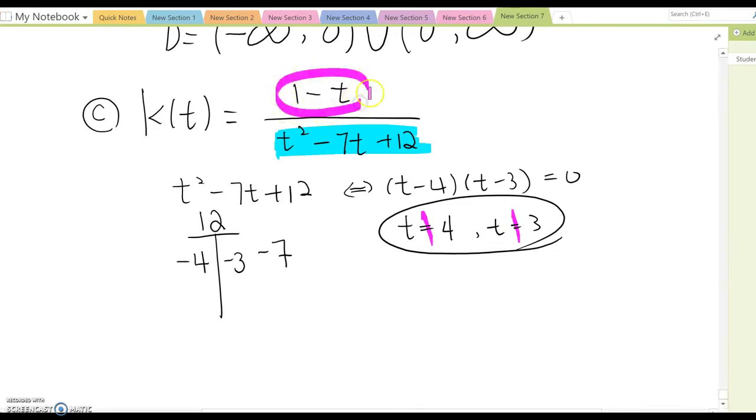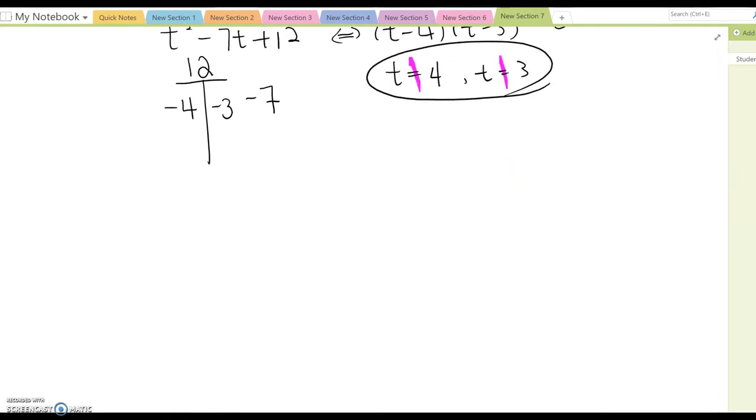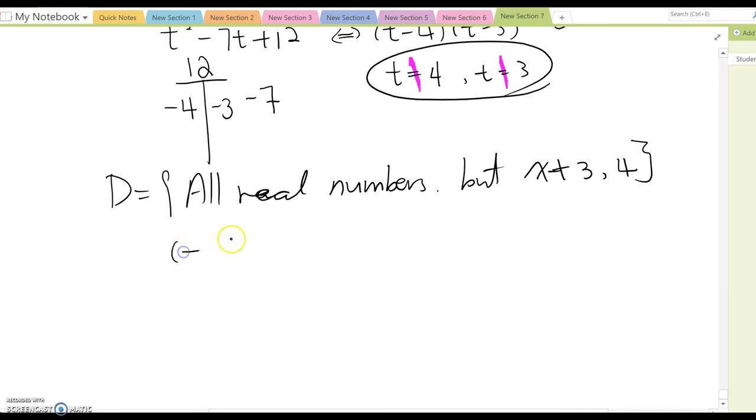What about the numerator? It doesn't matter, because numerator can be 0 as well, but not the denominator. Therefore, the domain be all real but x cannot be 3 and 4. Interval notation, you can make negative infinity to 3 union 3 comma 4 union also 4 comma infinity.